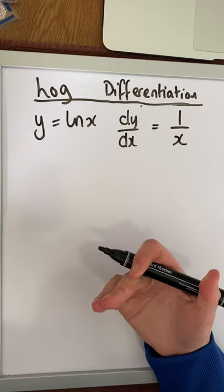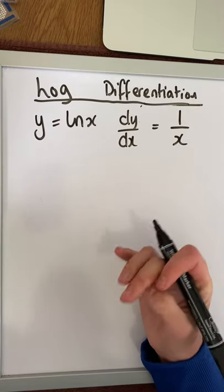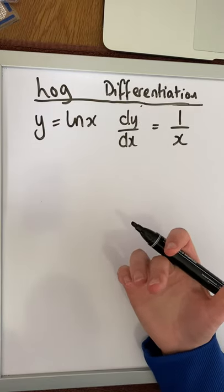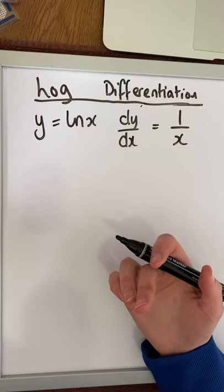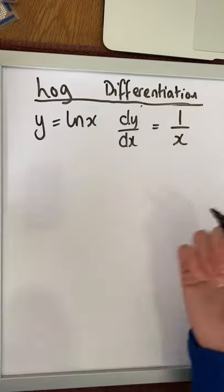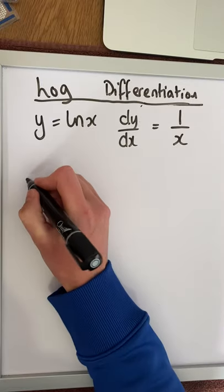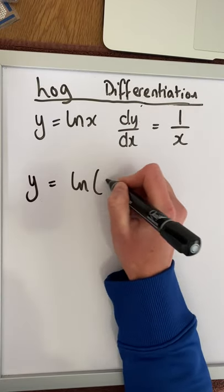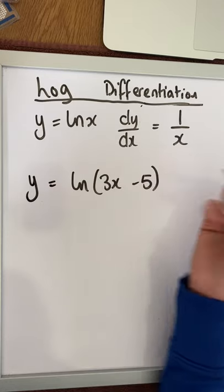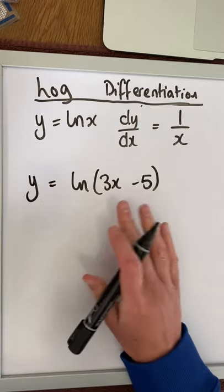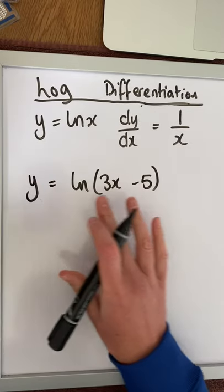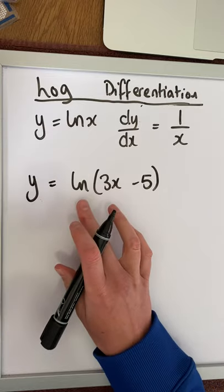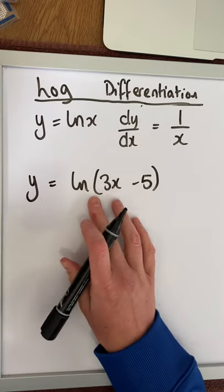Now where we have to look at introducing the product, quotient, and chain rule — that's what we want to concentrate on in this video. So if we have something like y is equal to the natural log of 3x minus 5, we are going to be differentiating the natural log.